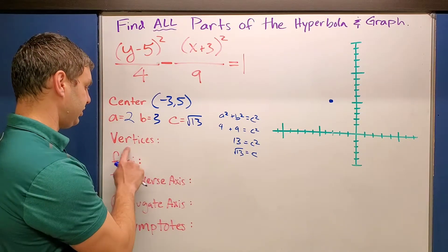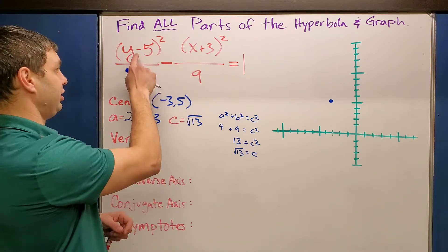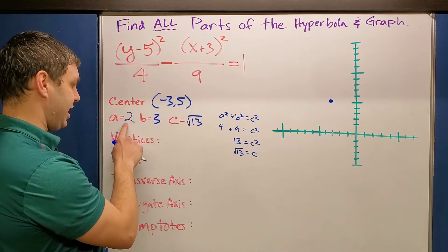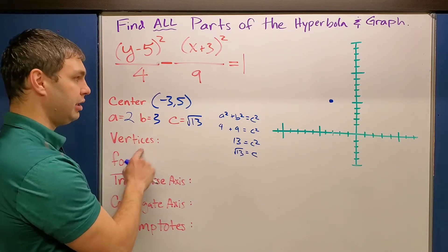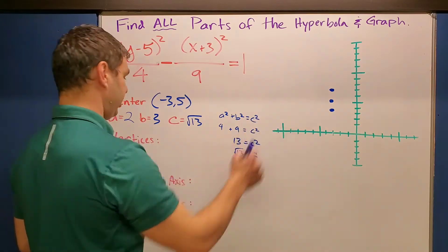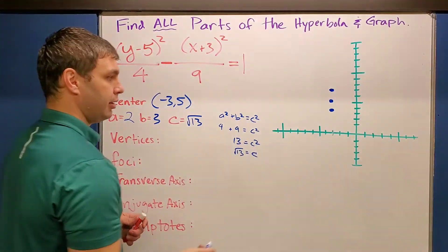But first off, let's find our vertices. Since we already said that this is going to open up in the y direction, right up and down, when the y's come first, we have to go up and down a units, in this case two, from our center to find our vertices. Those two points are going to be the vertices of the both branches of my hyperbola.